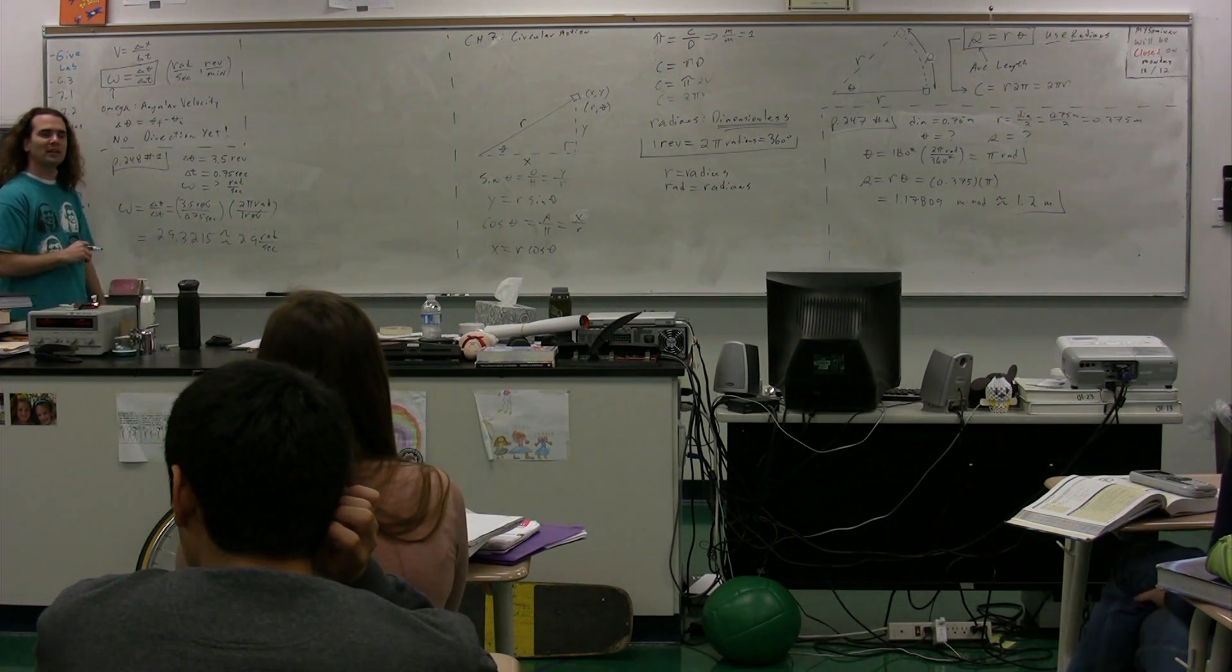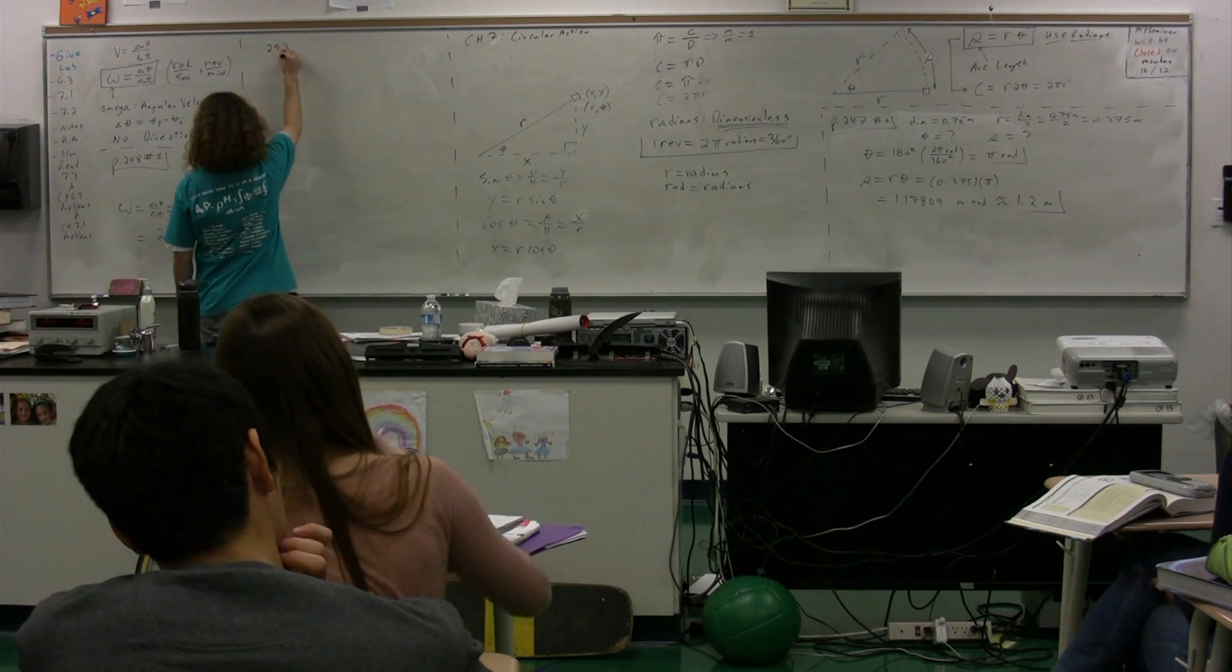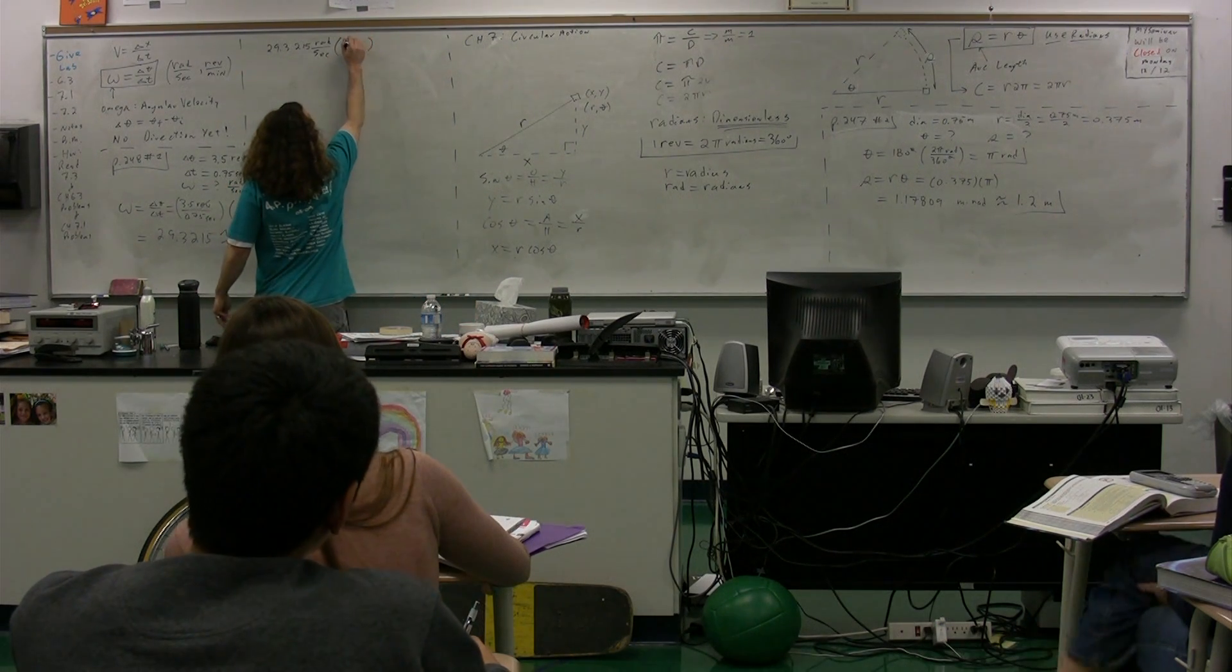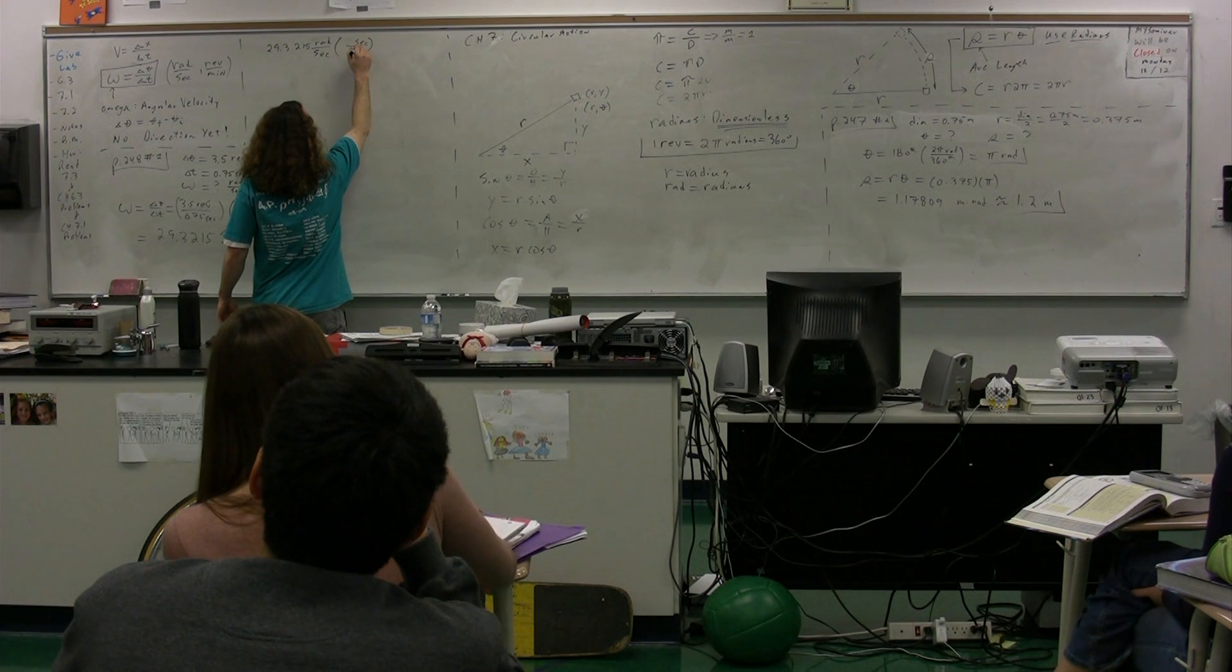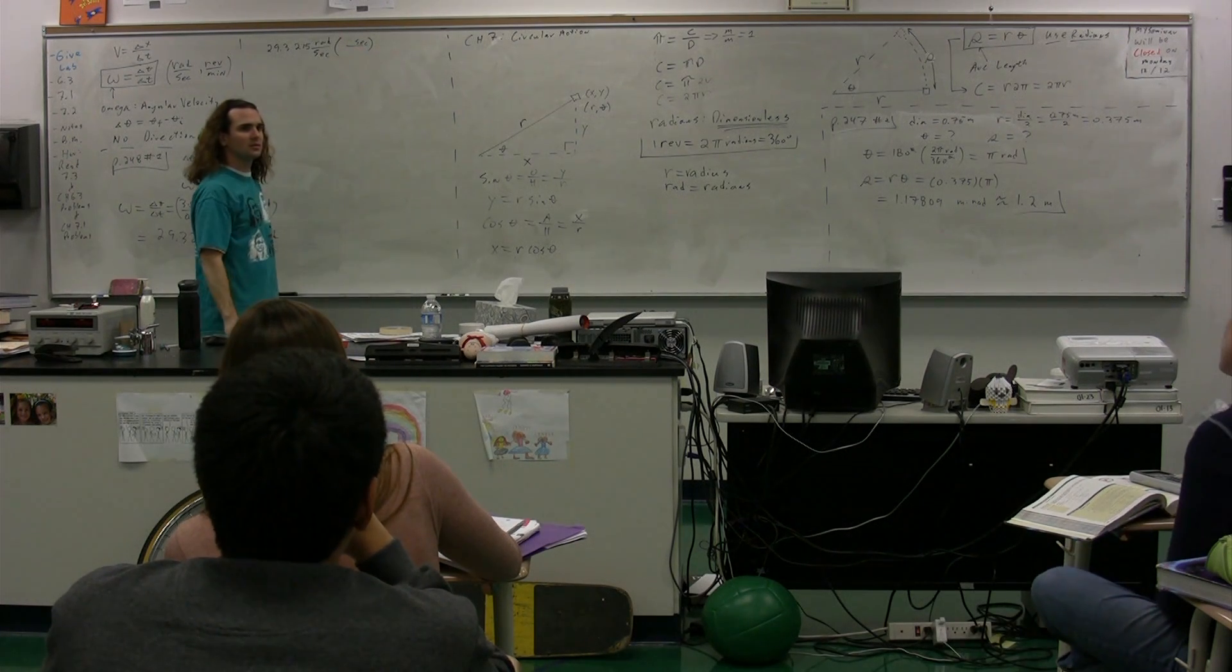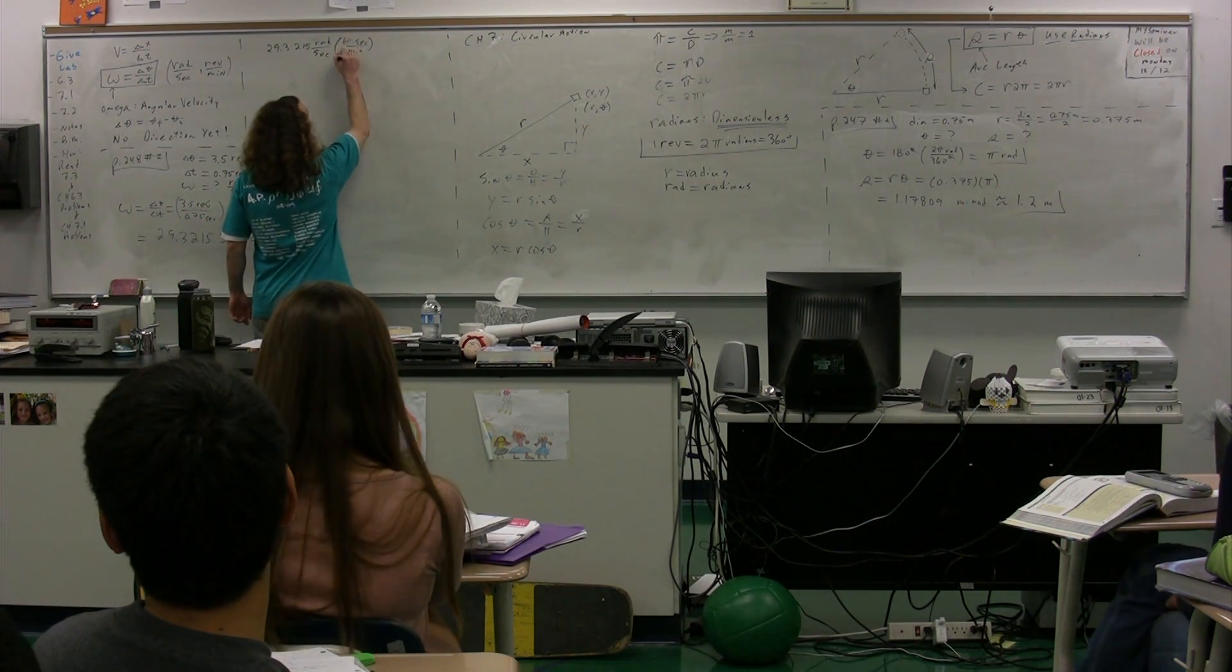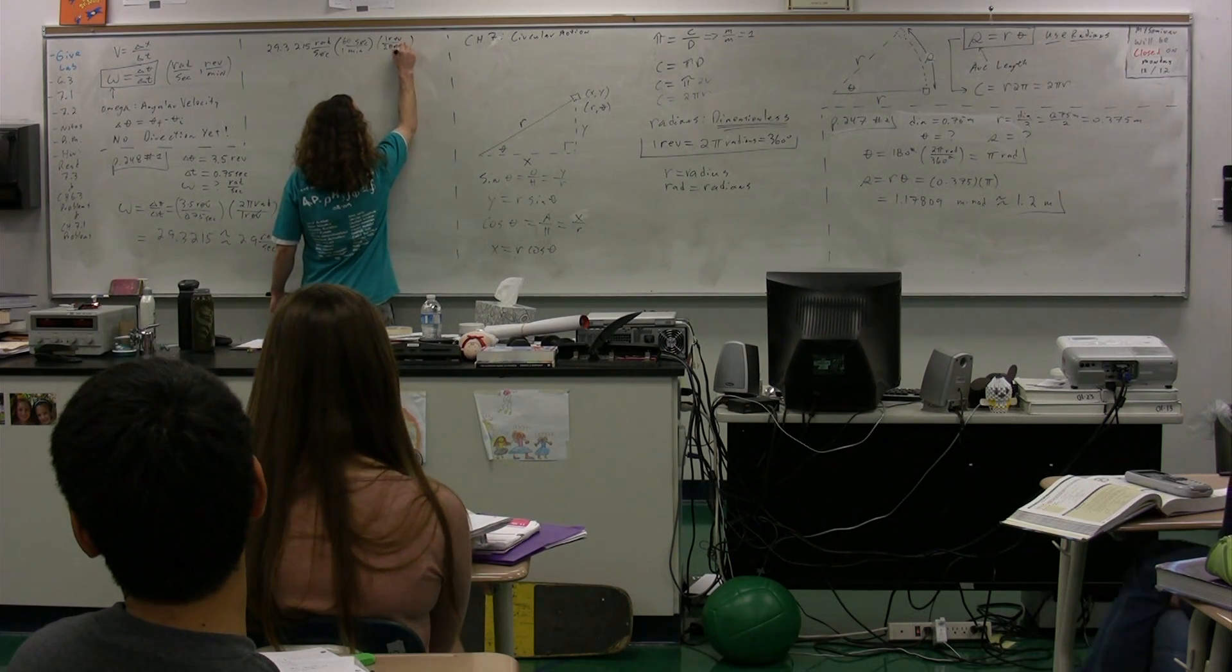We multiply by 60 seconds over one minute, so we're now in radians per minute. Then multiply by one revolution over two pi radians. Radians cancel out, and we're now revolutions per minute.